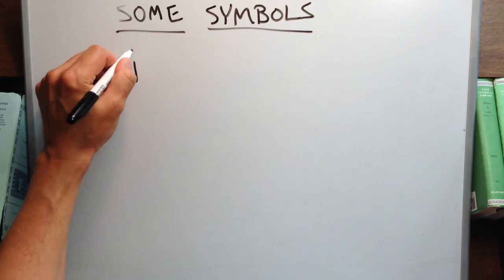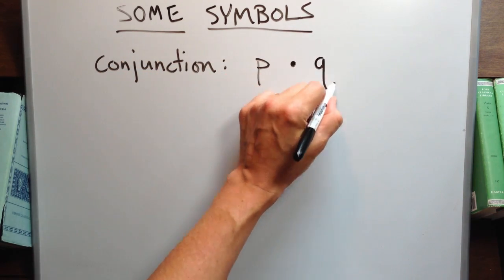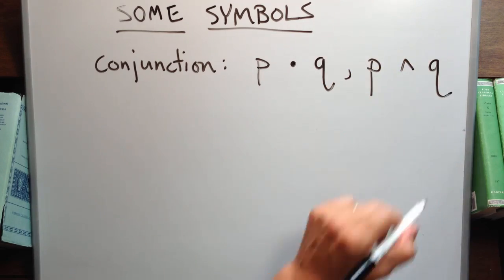In order to make the writing of compound statements easier, we use the following symbols. For the conjunction, we use a dot or a wedge.